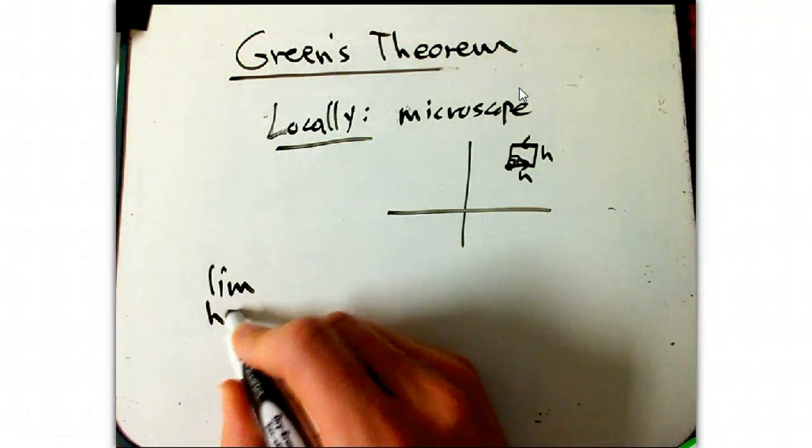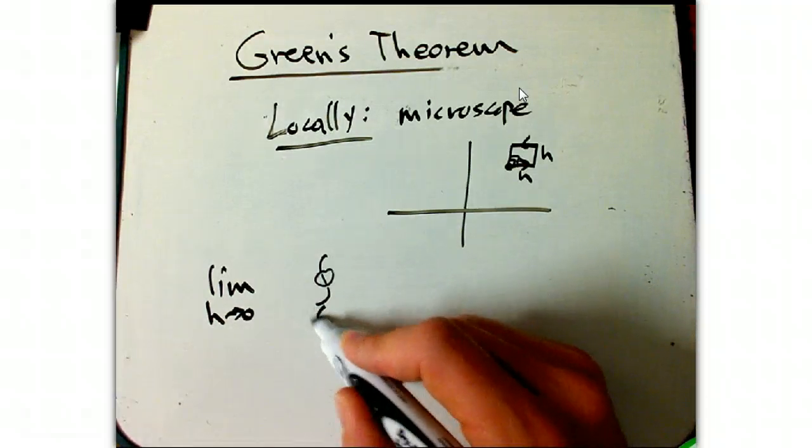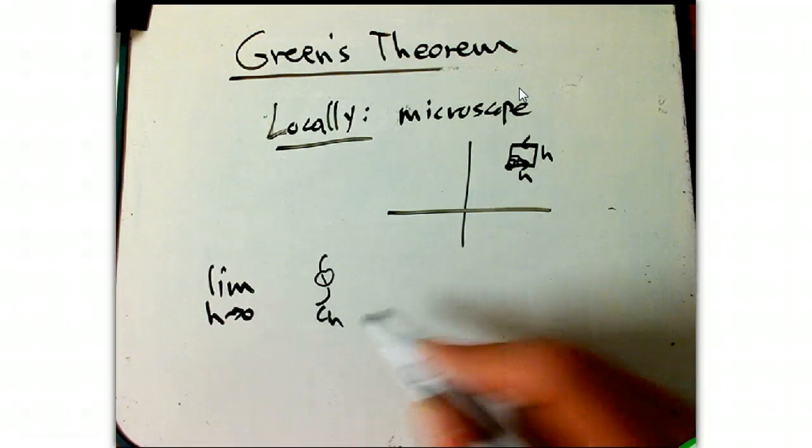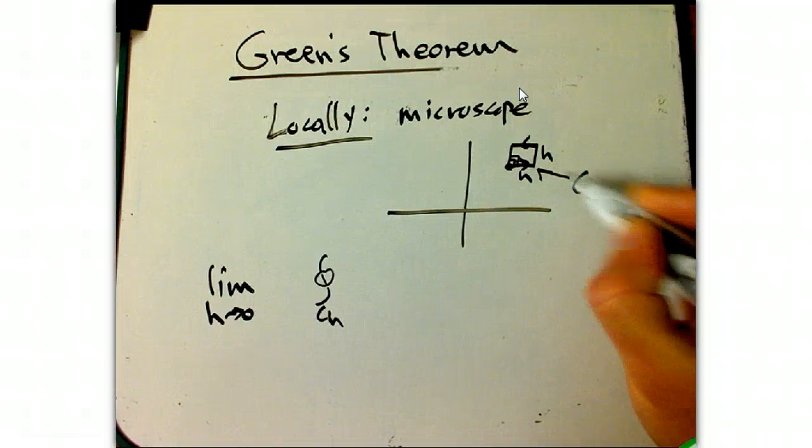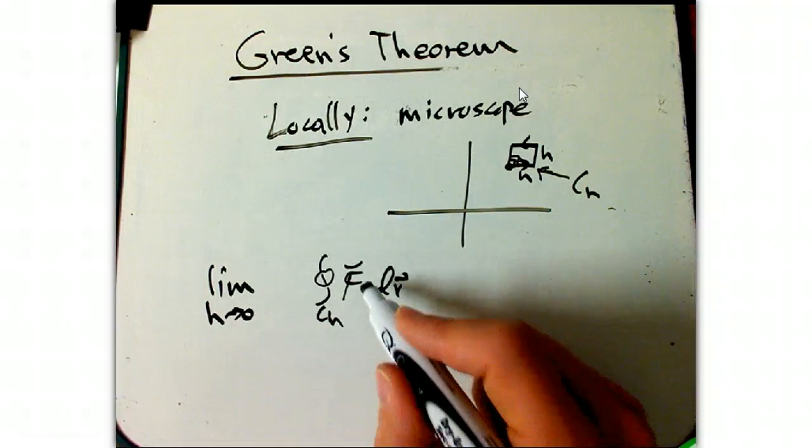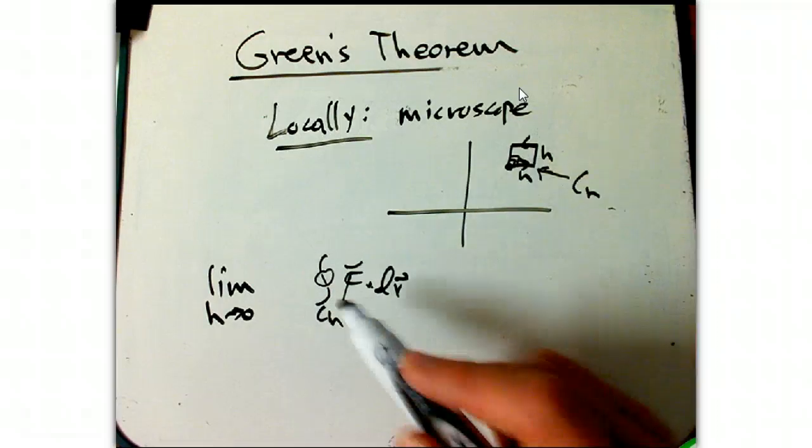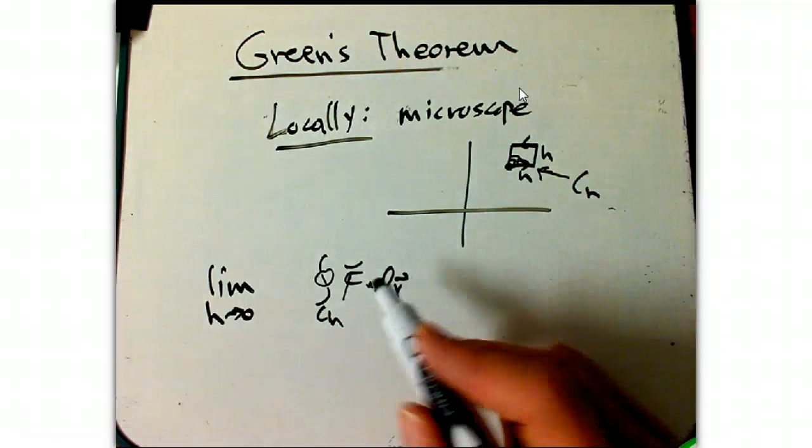So in other words, we take the limit, as h goes to zero, of the circulation, call that ch, maybe for the box, this curve is c sub h, of f dot dr. Well, this limit just becomes zero, because when the box gets really small, the circulation gets really small.